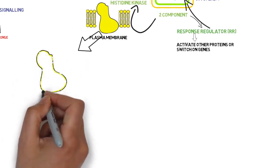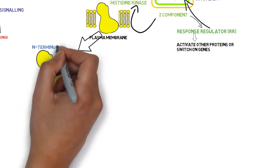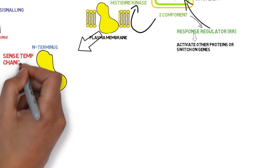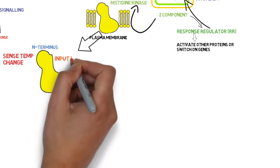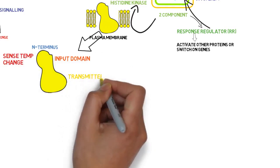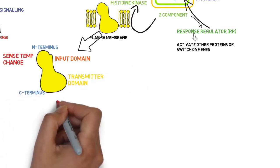Here we have the histidine kinase that is located in the cell membrane of the bacteria. The N-terminus of the protein, which faces toward the outside of the cell, is the input domain for sensing temperature change, while the intracellular C-terminus is called the transmitter domain.